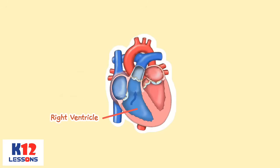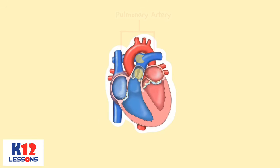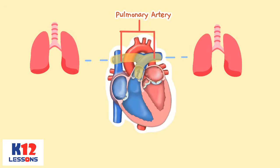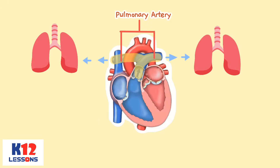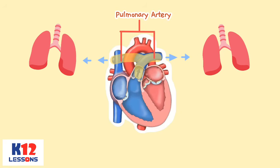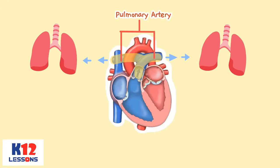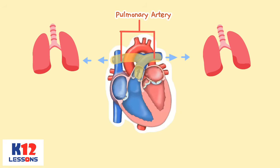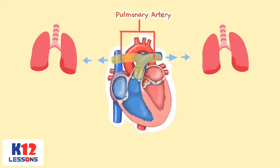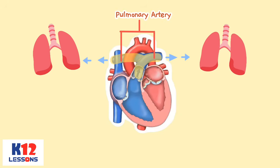As the ventricle contracts, blood leaves the heart through the pulmonic valve, into the pulmonary artery and to the lungs where it is oxygenated. Oxygen-poor, carbon dioxide-containing blood goes through the pulmonary artery to the lungs where carbon dioxide is exchanged for oxygen.